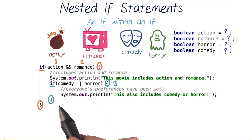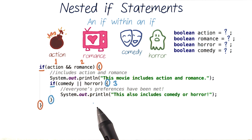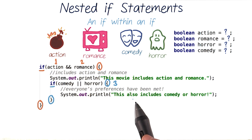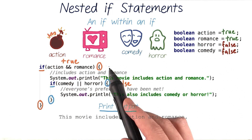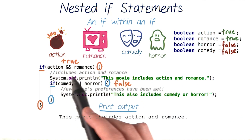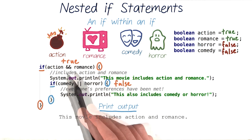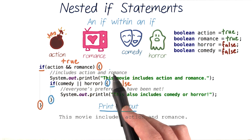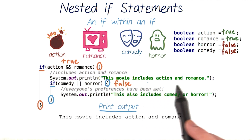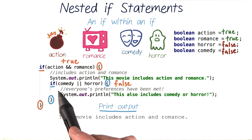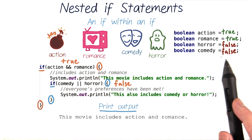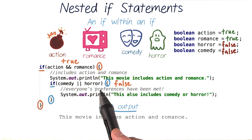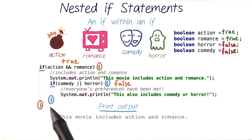The nested if has given us the ability to break up a long test condition, and it also lets us add code that executes inside each if statement separately. With these values, we'll look at our decision-making code line by line. We know action and romance are both true, so combined with an AND operator, this whole expression will also be true. We'll enter the outer if statement and print out 'this movie includes action and romance.' The next line is our nested if, which checks if comedy or horror is true. Since both are false, this expression is also false, and we'll skip the inner if's code.